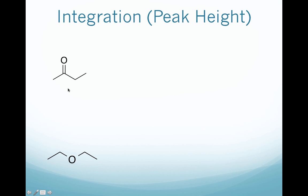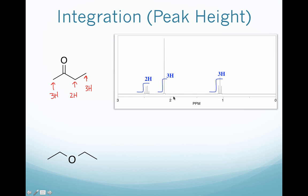Looking at a couple of examples. First we have a ketone compound with three different types of hydrogen. We have a methyl group, giving us an integration corresponding to 3 hydrogen. We have a CH2 group, giving us an integration corresponding to 2 hydrogen. And another CH3 group, giving us an integration corresponding to 3 hydrogen. Looking at the spectrum, we can see the CH2, one CH3 signal, and another CH3 signal.